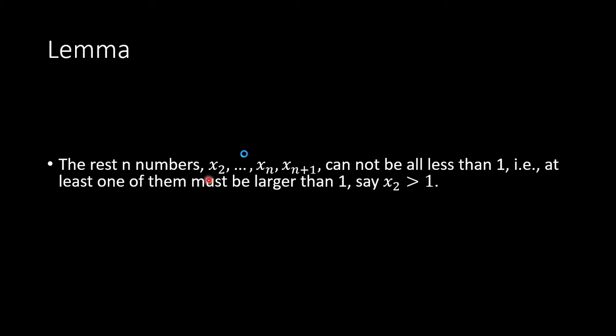At least one of them, one of the n numbers, had to be larger than 1. Let's say x2 larger than 1. So x1 less than 1, x2 larger than 1.